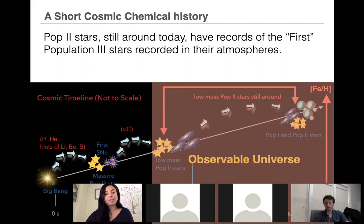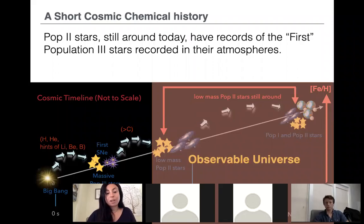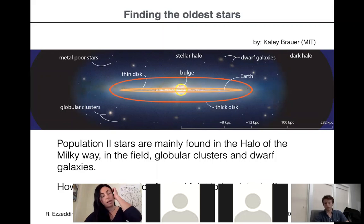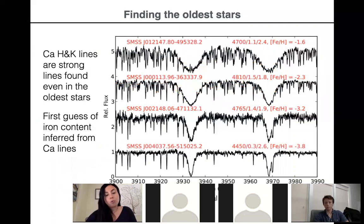The observable universe provides us with these very interesting objects — the low-mass population II stars that are still around, some of which remain in the Milky Way halo. We use observations of these low-mass stars to trace back using stellar archaeology and infer properties about the first stars. However, these population II stars are not very easy to find — they are tricky. They are mainly found in the Milky Way halo and are too faint, requiring lots of time on large telescopes for high-resolution spectroscopy. We go through multiple steps to identify the oldest population II stars.